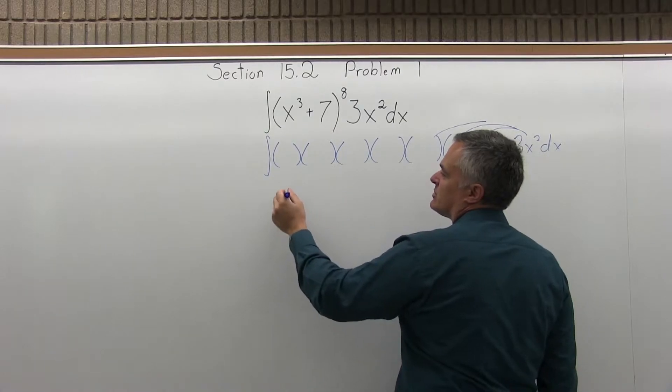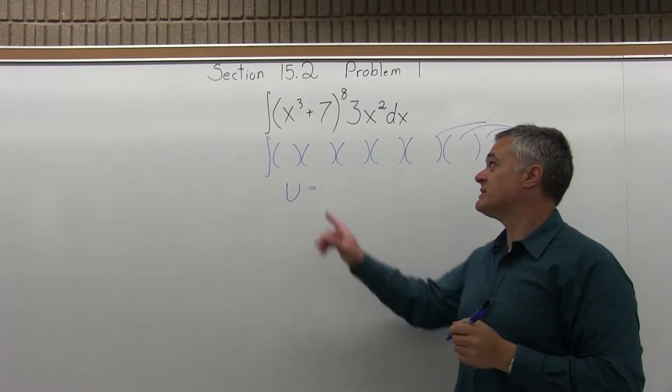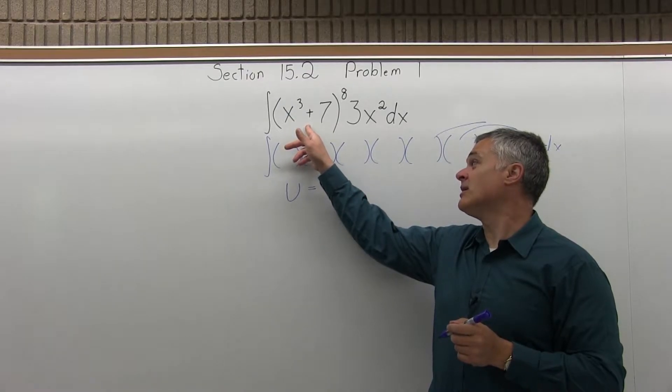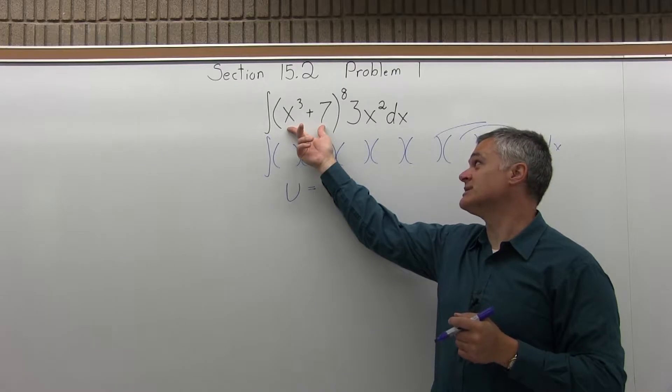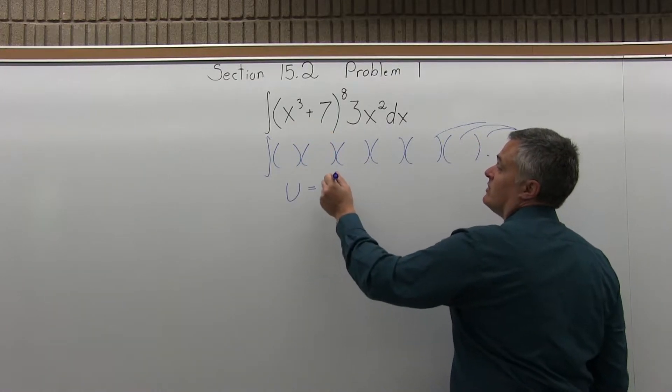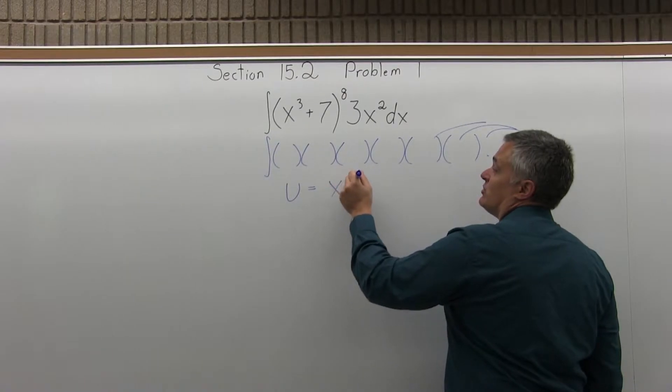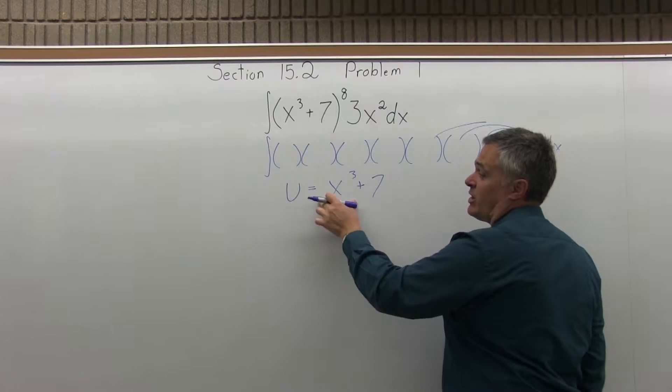So step one for the substitution method is choose u. And of your common choices, you have stuff in parentheses, stuff in the denominator, power of e, stuff under the root. The only thing that really fits of your four choices is the stuff that's in parentheses. So my value of u will be x cubed plus 7, because that's what's in the parentheses. That's step one, choose u.